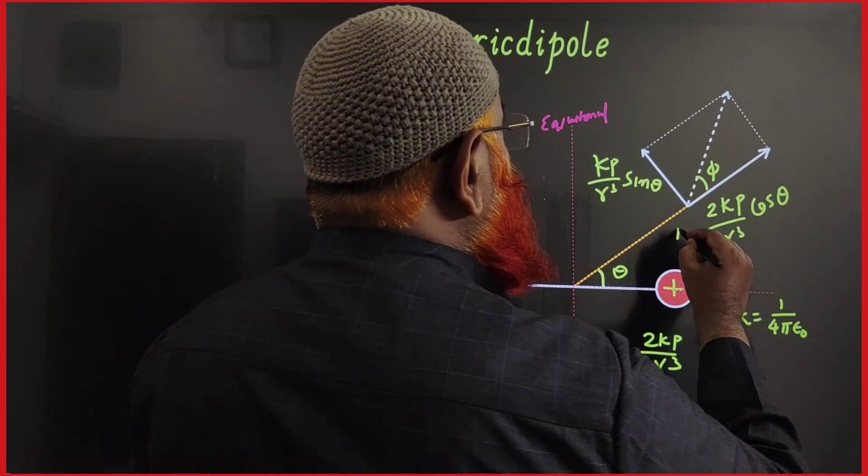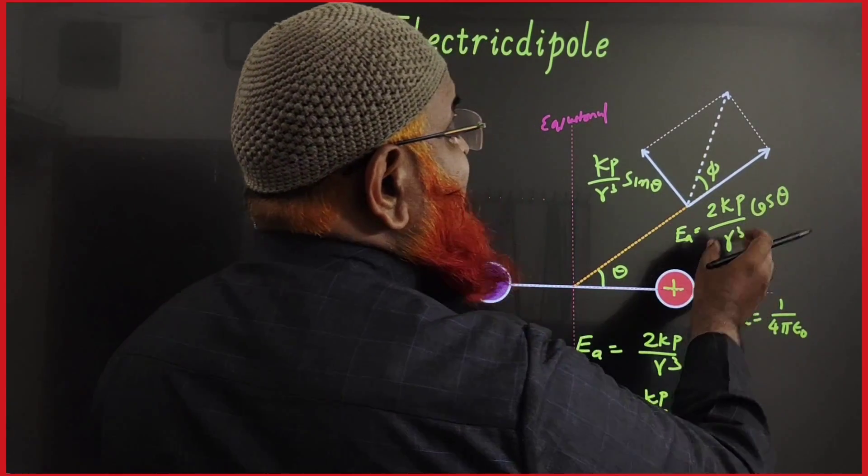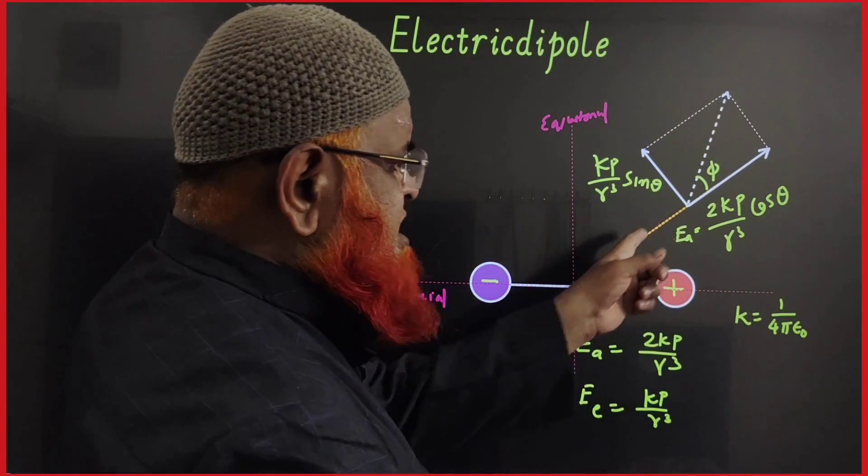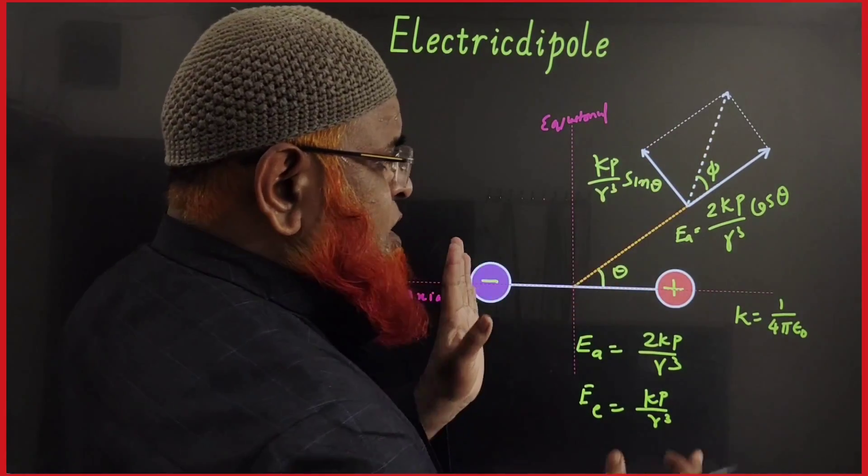So axial line means here. You have to consider 2kp by r cube cos theta and in this direction it is making kp by r cube sin theta. Okay, that's it.